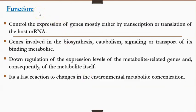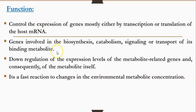Coming to the function, the major function of these riboswitches is to regulate gene expression, mostly at the level of transcription or translation of the host mRNA. This mRNA gets transcribed from genes which are involved in the biosynthesis, catabolism, signaling, or transport of its binding metabolite. When the concentration of this metabolite is increased in the cell, there will be a down-regulation. The metabolite binds to the riboswitch, which in turn regulates gene expression at the level of transcription or translation. This regulation by riboswitches is a fast reaction compared to other regulatory mechanisms and quickly adapts to the metabolite concentration within the cell.